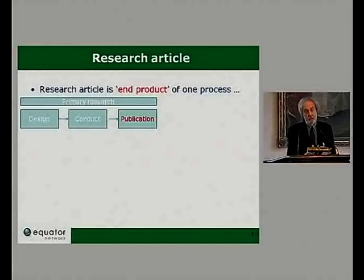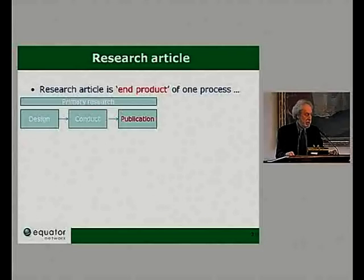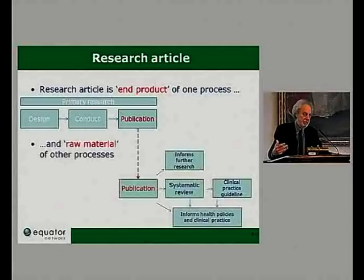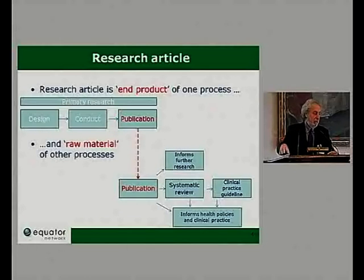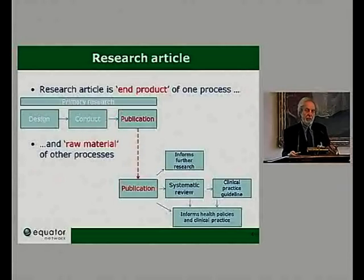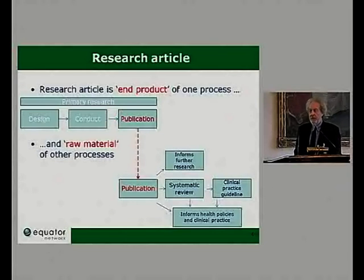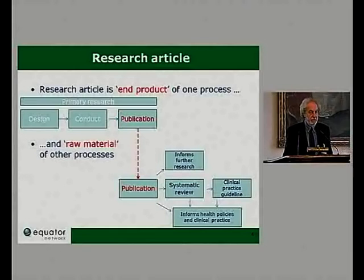We tend to think of research articles as the end product of a process — one designs a piece of research, carries it out, and then publishes it. But in fact the research article is also the raw material for various other processes: most obviously for systematic reviewers who take primary articles and bring them together, but also for other researchers and for health policy and clinical practice guidelines. It's important not to see publication as the end.